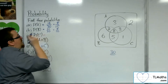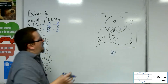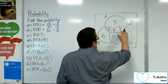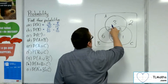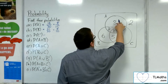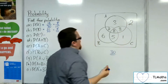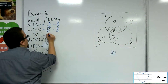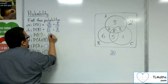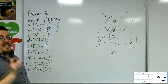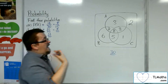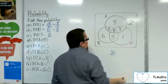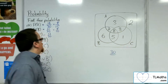Probability of not C is anything that is not inside that circle. So we've got 6, 8, 11, and 13. So it would be 13 out of 30. That means probability of C would be 17 out of 30 — checking: 1, 6, 14, 17 — yes, 17 out of 30.